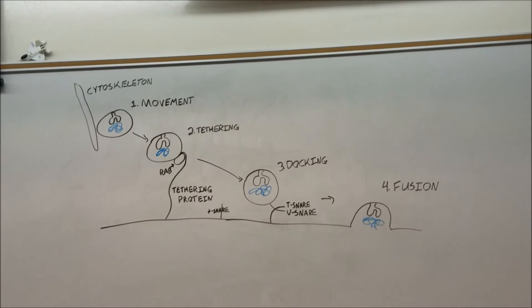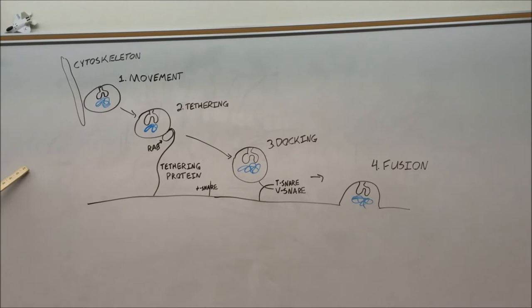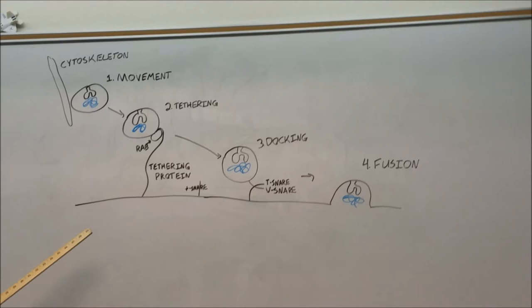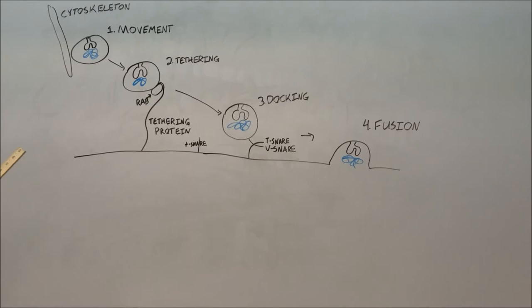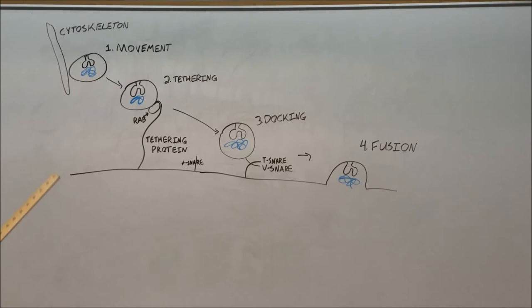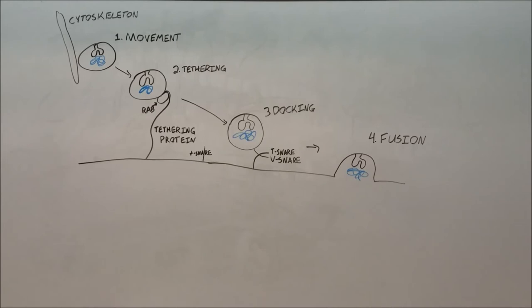The next steps are the movement of the vesicle to the target membrane along the cytoskeleton. A protein on the cytoskeleton carries the vesicle along towards its target membrane. Next, a Rab protein bonds with the vesicle, and the tethering protein attaches to that Rab protein in the process of tethering. The tethering protein draws in that vesicle to its target membrane.